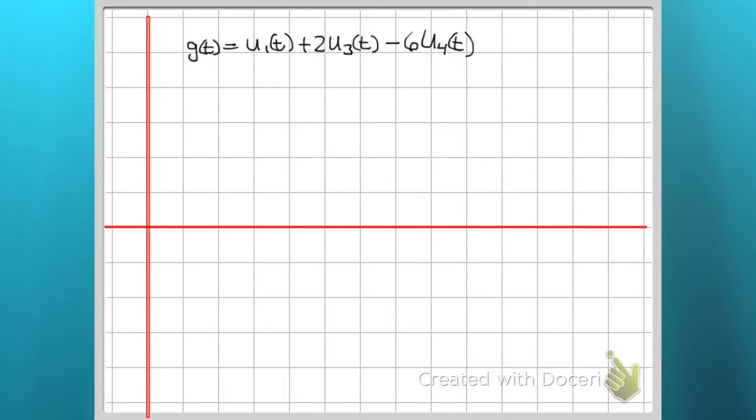So if I'm going to graph this G of T using our unit step function here, before 1 in the domain, let me draw my tick marks.